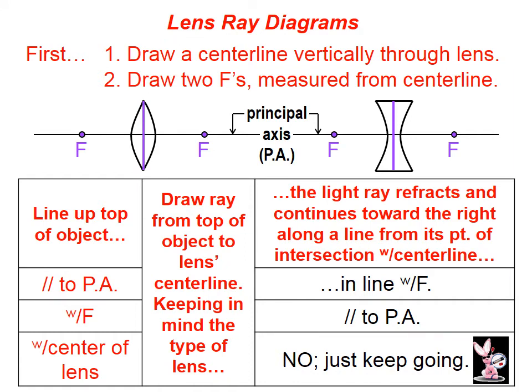In an earlier lesson, I went through the three rules that you can use when drawing lens ray diagrams. Go in parallel to the principal axis and come out on a line through the focal point. Go in to the focal point and come out parallel to the principal axis. Or head towards the center of the lens and just keep going.